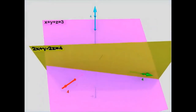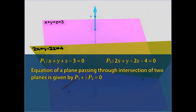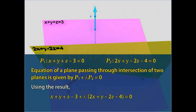Solution: Let P1 represent the plane x plus y plus z minus 3 equals 0 and P2 represent the plane 2x plus y minus 2z minus 4 equals 0. The equation of a plane passing through the intersection of two planes P1 and P2 is given by P1 plus lambda P2 equals 0. Using the result, we get x plus y plus z minus 3 plus lambda times 2x plus y minus 2z minus 4 equals 0. Call this Statement 1.